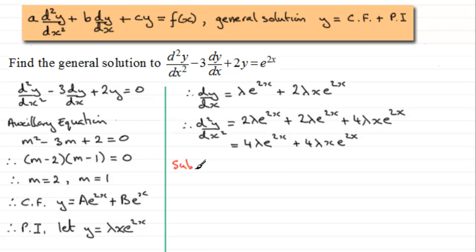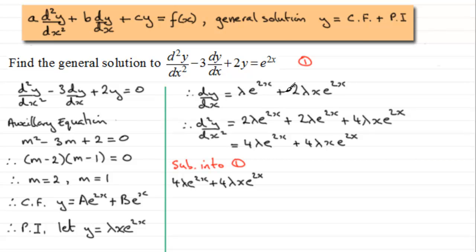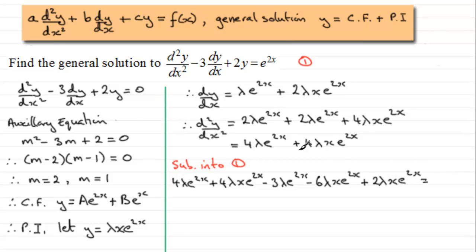Now we substitute these results into equation 1, our original equation. We put in d²y/dx²: 4 lambda e to the 2x plus 4 lambda x e to the 2x. Then minus 3 times dy/dx, multiplying through gives minus 3 lambda e to the 2x minus 6 lambda x e to the 2x. Then plus 2y gives plus 2 lambda x e to the 2x. This equals e to the power 2x.